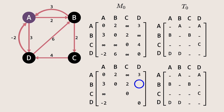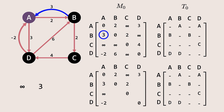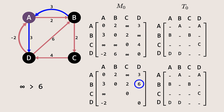Next, let's check the path between B and D. The current shortest cost to reach D from B is infinity, meaning there's no direct path. We'll check if a shorter path exists via node A. The path from B to A has a cost of 3, and the path from A to D has a cost of 3. Adding these, the total cost becomes 6, which is less than the current shortest path of infinity. Therefore, we update the cost to 6 and set the previous node to A, as the path to D goes through A.